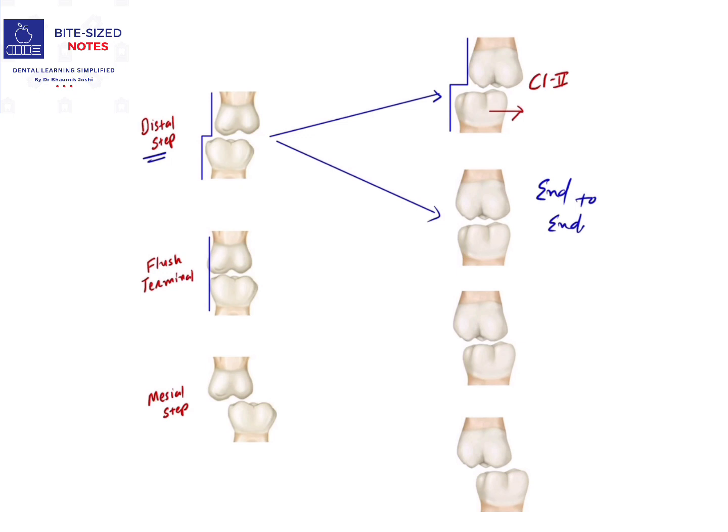But with the help of the forward shift that we had seen, if that takes place, the molar relationship in the permanent teeth will be Class 1. In the case of mesial step, the distal surface of the mandibular second molar in the deciduous dentition...